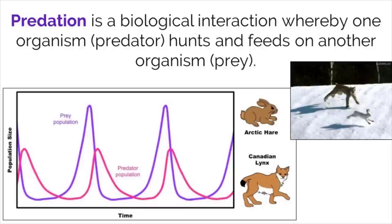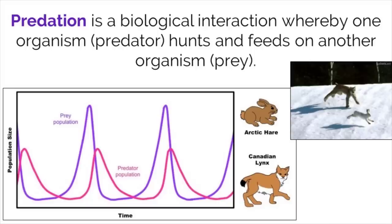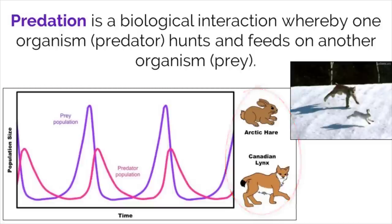Another complex interaction in ecological systems is predation, which describes when one organism, the predator, hunts and feeds on another organism, the prey. Because the predator population is reliant on the prey to survive, these two species are heavily intertwined, meaning if the population of one changes, the other one will also change.